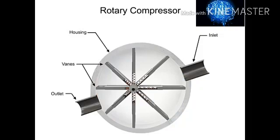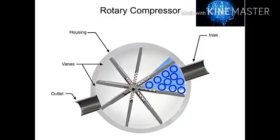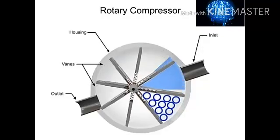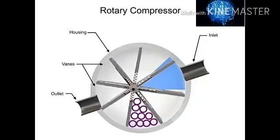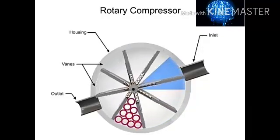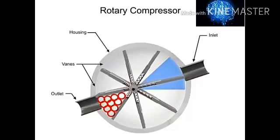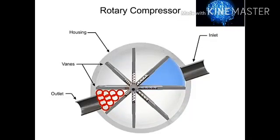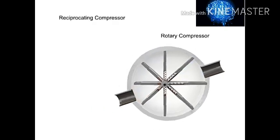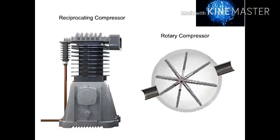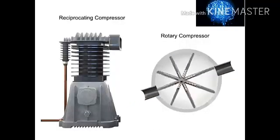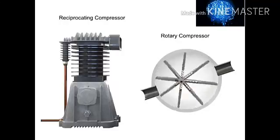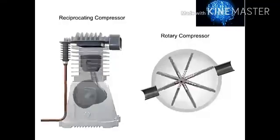Air enters at the largest chamber. As the vanes rotate, they retract, causing the chamber to get smaller and compress the air. Air exits at the smallest chamber. Rotary compressors are typically free of the vibration and pulsation that occurs with reciprocating compressors.